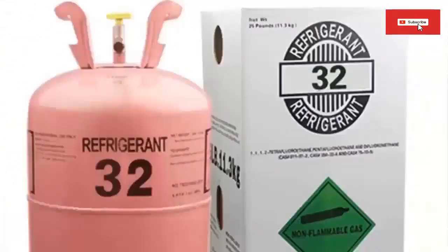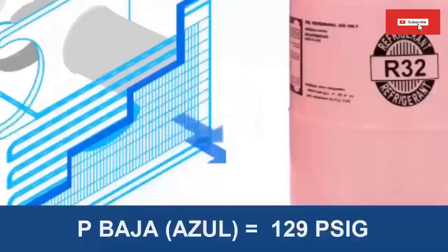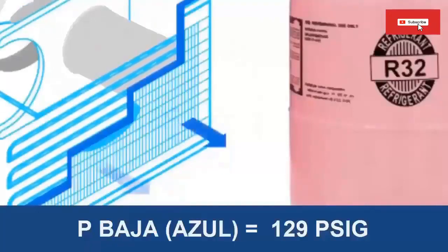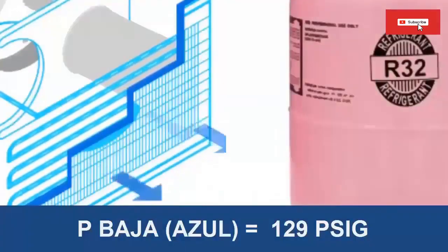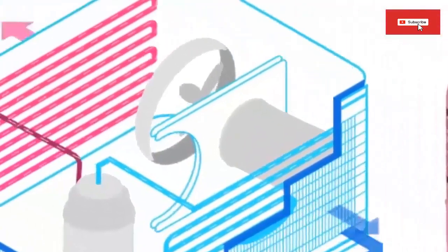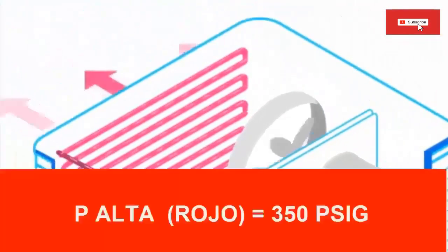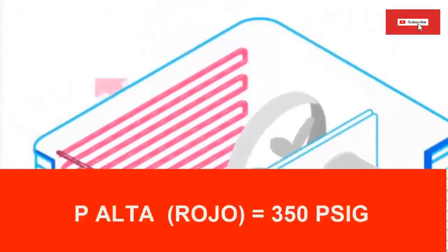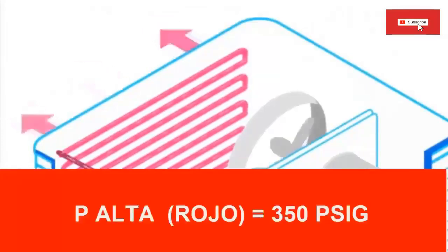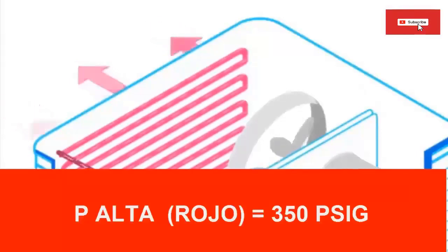For an evaporator temperature of 5°C, the pressure gauge on an R32 air conditioner should read about 129 psi. The high-side pressure of an air conditioner working with R32 for an outdoor ambient temperature of 30°C should read close to 350 psi.